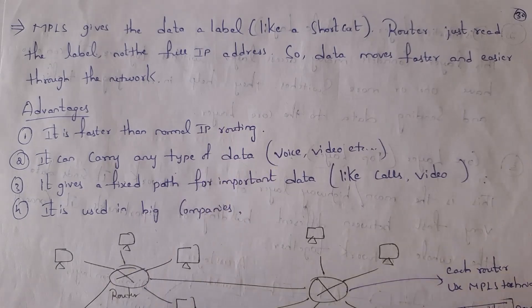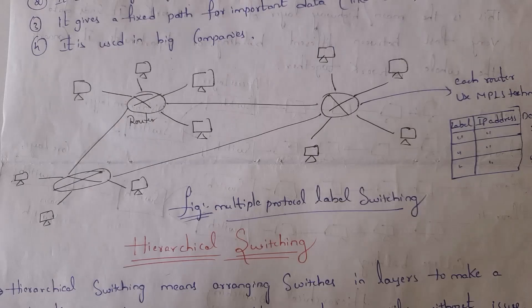In MPLS technique, instead of routers verifying IP address, routers will verify label. Label is like a shortcut. In order to read complete IP address it will take time, so instead of reading complete IP address, if routers use this shortcut then data will be transferred very fast.